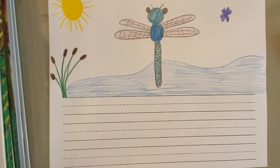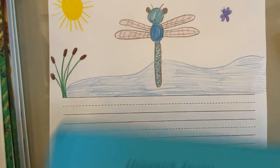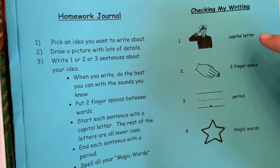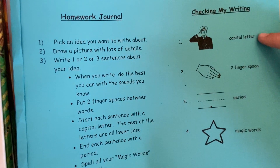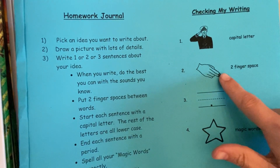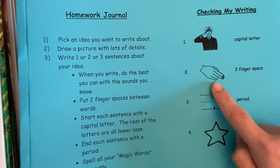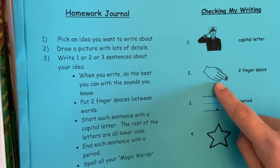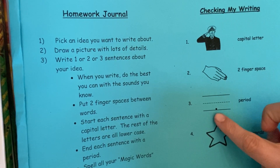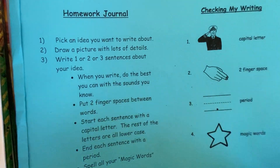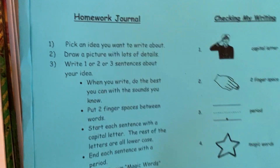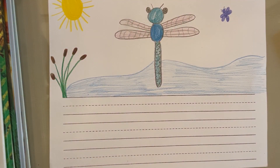Very good. And remember, I have my 'check our writing' poster right here. So we can use this as we do our writing. Number one, what do we have to start with? What do good writers start with? That's right, a capital. Number two, what do we have to put between our words? Yes, two finger spaces. Number three, what do we have to put at the end of our sentence? A period. Very good. And number four, we have to make sure our magic words are spelled just right. So we will do that as we are doing our writing.